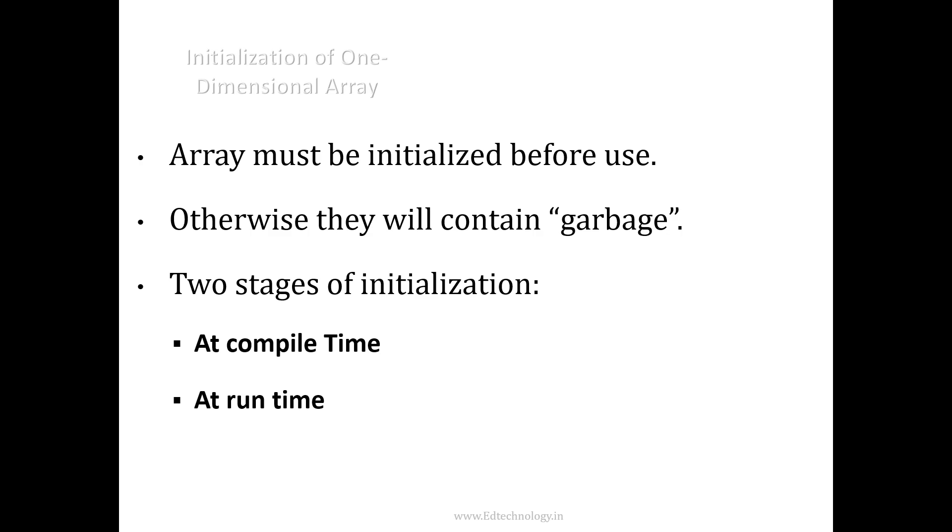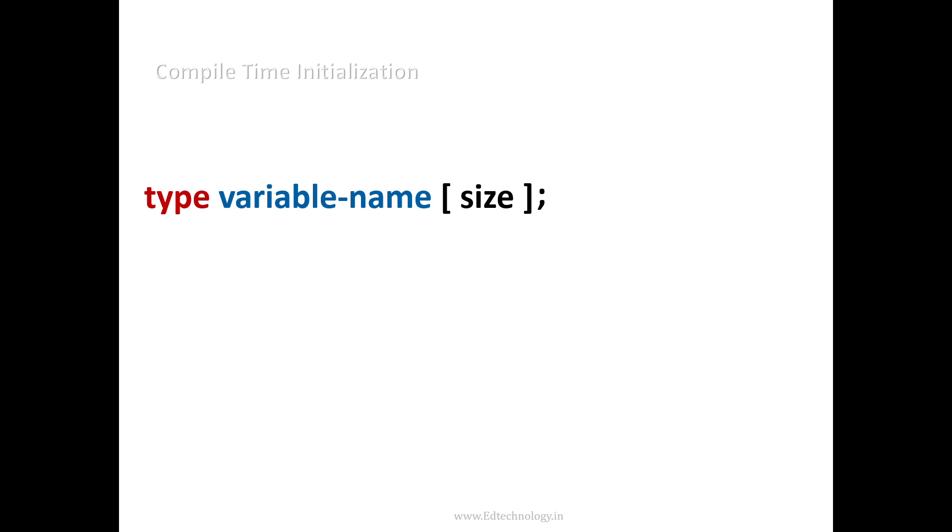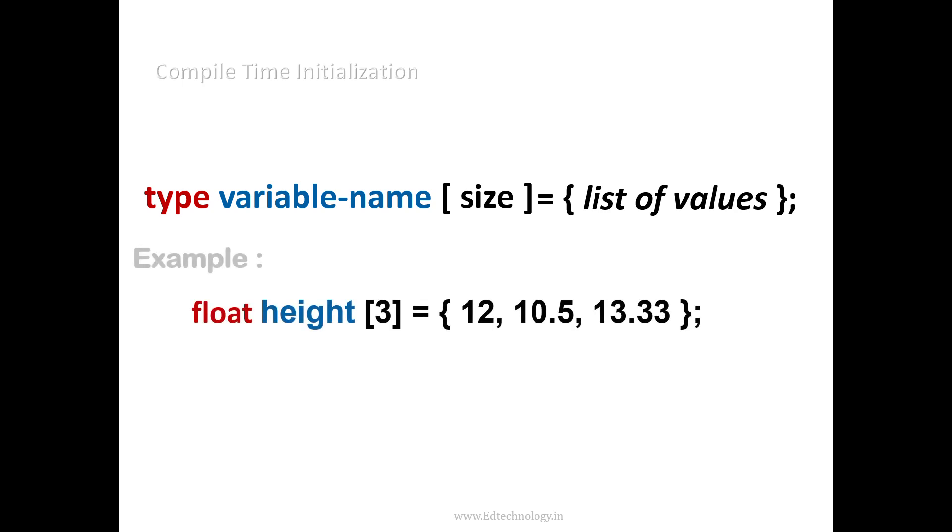Similar thing we will be seeing in here. So the compile time declaration has the type, variable name, and the size, and we can put in the list of values. We can put in the list of values just I showed you in the notepad also. This is the example.